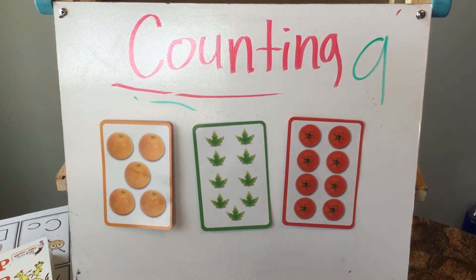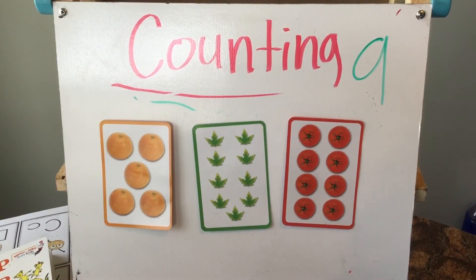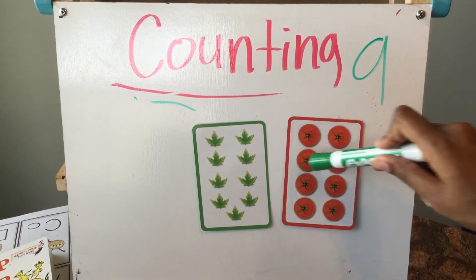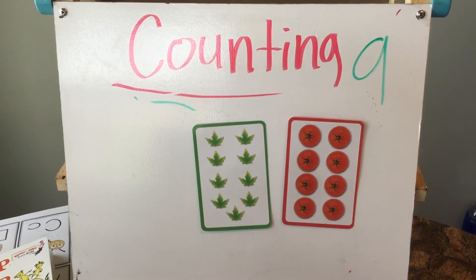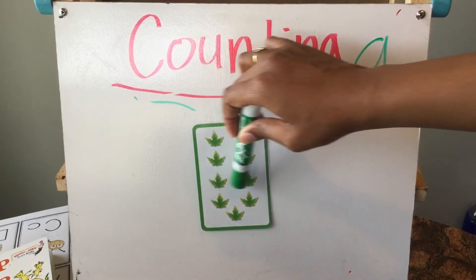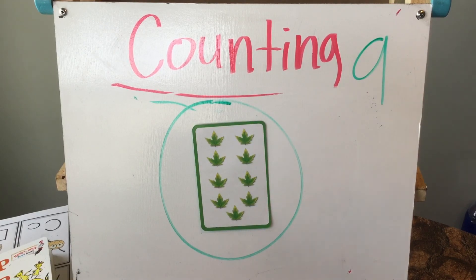Let's count the oranges — one, two, three, four, five. Does that show nine? No, so it is not the answer. Let's count the tomatoes — one, two, three, four, five, six, seven, eight. Does that show nine? No, it's not the answer. Let's count the leaves — one, two, three, four, five, six, seven, eight, nine. Yes, it shows nine, so this is our answer. Parents, if you have flash cards you can continue this skill, or you can make your own flash cards and draw circles or something simple on index cards. Alright, bye bye!